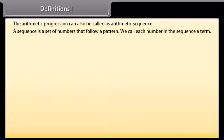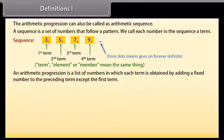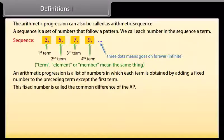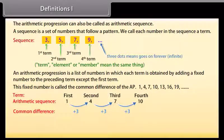We call each number in the sequence a term. An arithmetic progression is a list of numbers in which each term is obtained by adding a fixed number to the preceding term, except the first term. This fixed number is called the common difference of the AP. We can see here that the common difference is three.